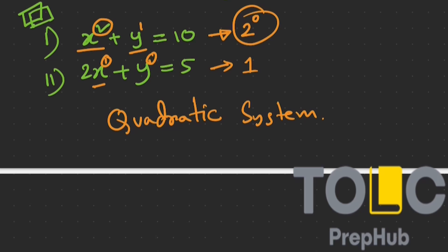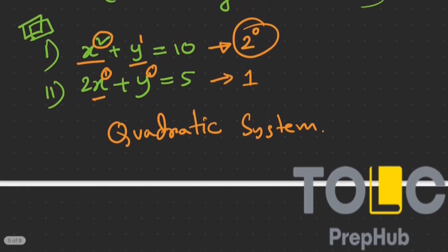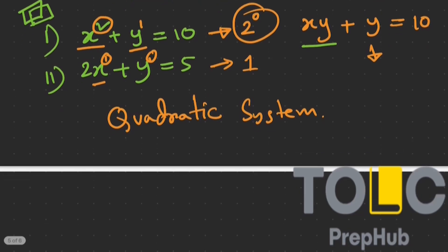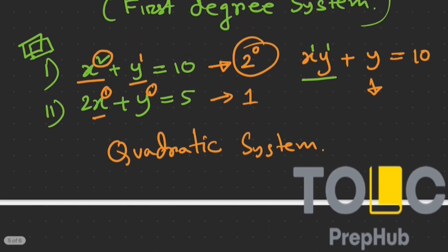At least one equation in the system must have a degree of 2, meaning the variable is squared. What if instead of the first equation we write xy plus y equals 10? In that case, the first term has two variables x and y, each with power 1, and the degree of the term is the sum of the powers, which is 2. So the degree of the equation is still 2.